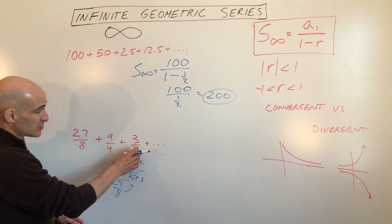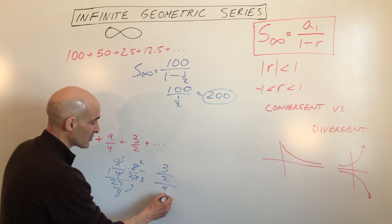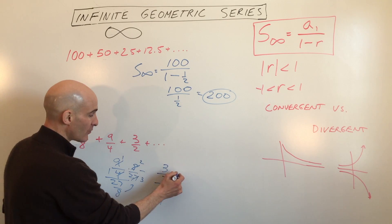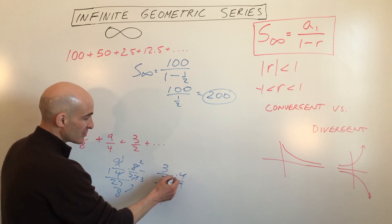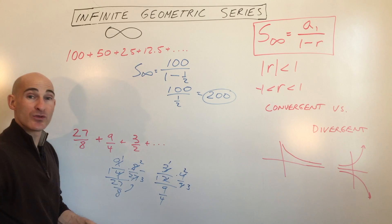Let's check another term, 3 halves divided by 9 fourths. 3 halves divided by 9 fourths. When you divide, it's like multiplying by the reciprocal. So this we can reduce. This we can reduce. Looks like we're getting two thirds again.